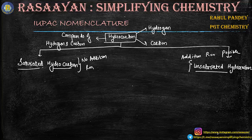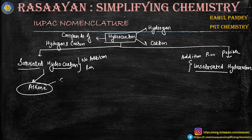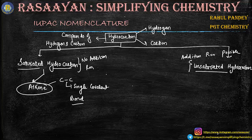So that is how we understand saturated and unsaturated hydrocarbons. Saturated hydrocarbons contain carbon-carbon single bonds. Remember, there is also a single covalent bond, and this is called an alkane.